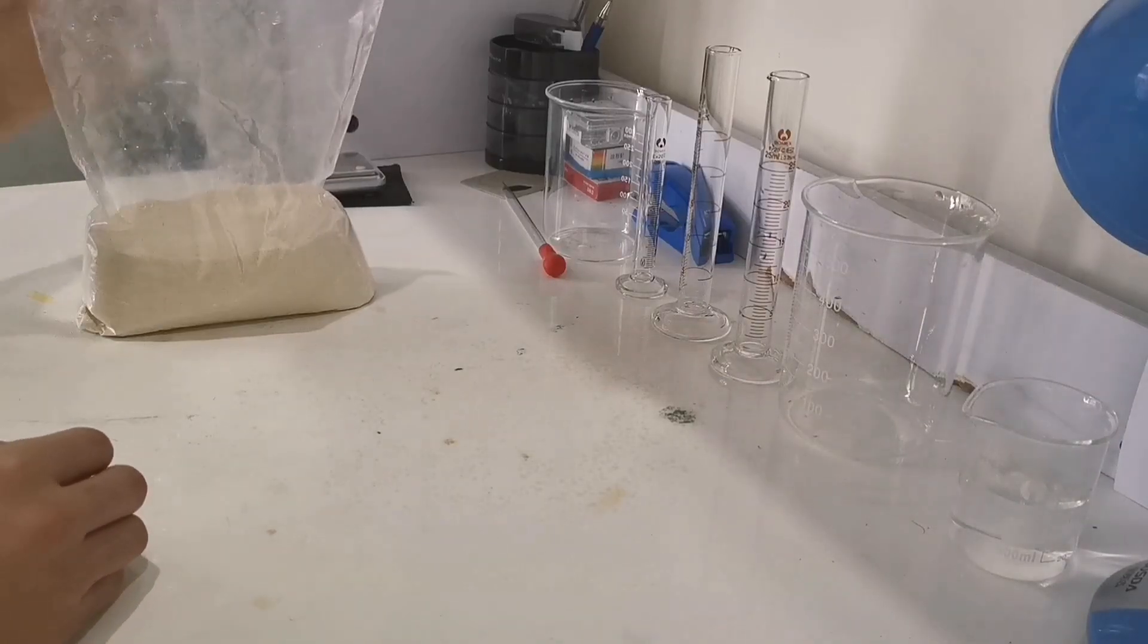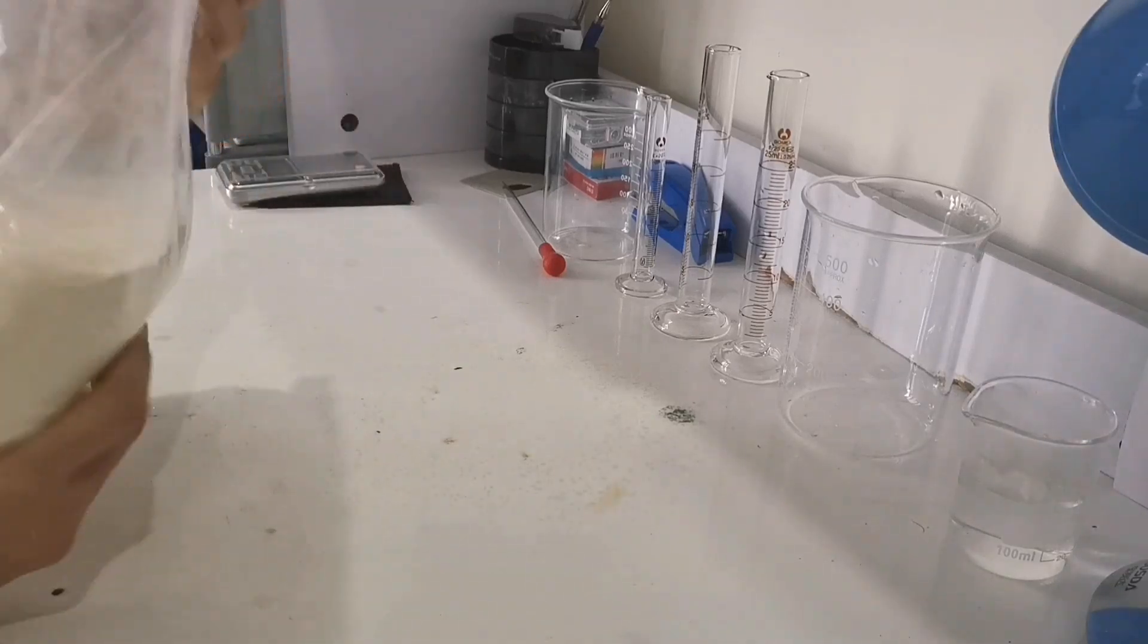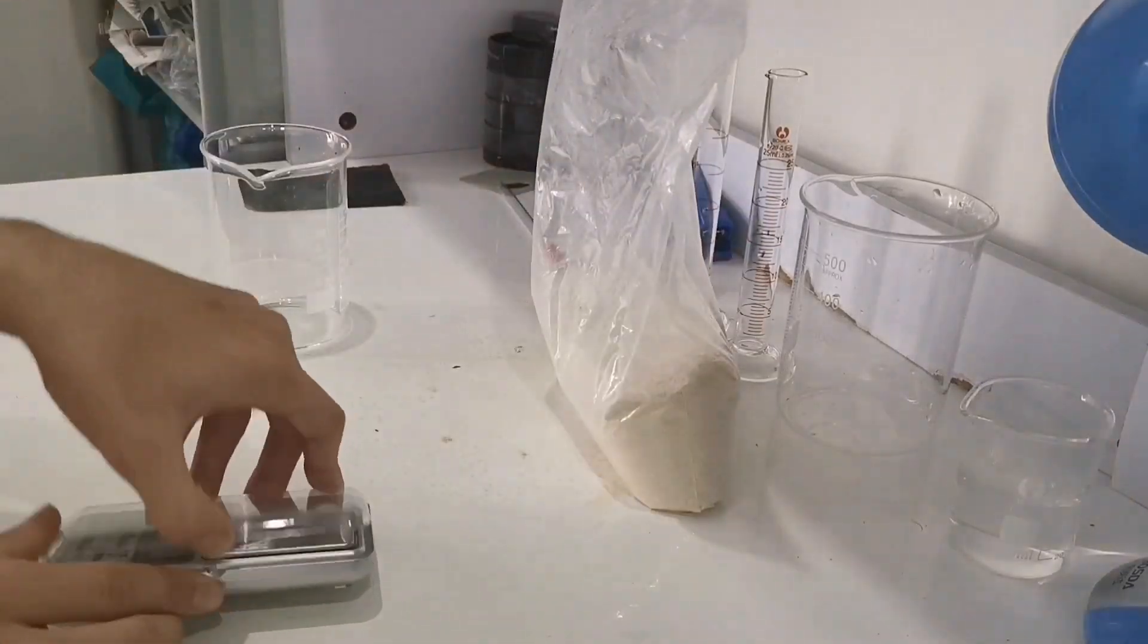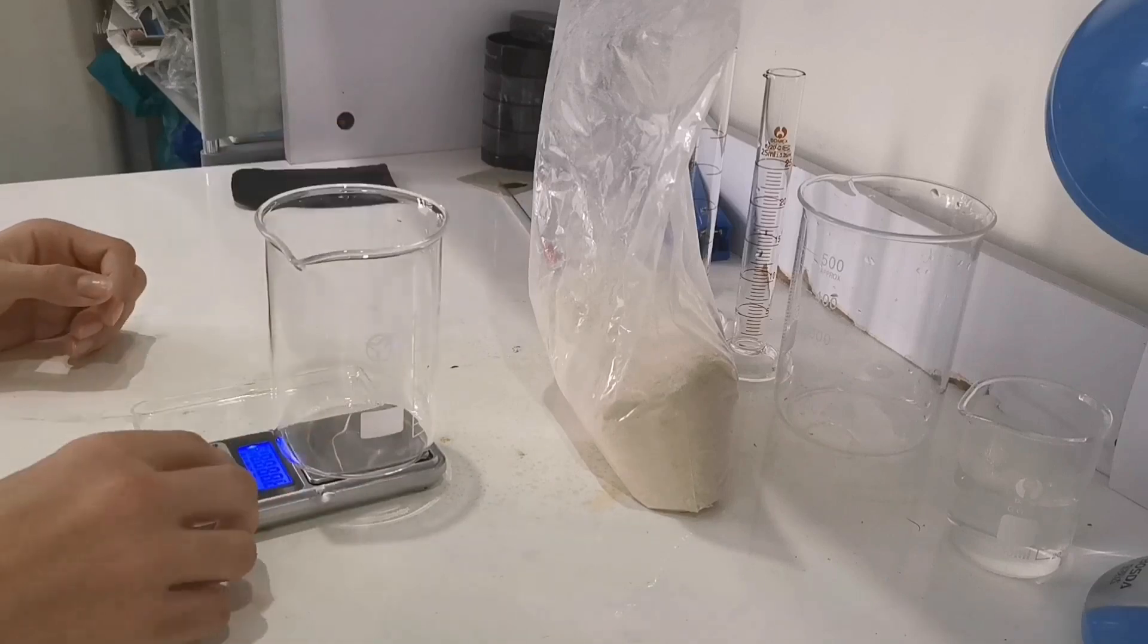So let's get started with casein. Casein has a whitish yellow color and it usually has a sheep wool flavor. Now we measure out 25 grams of casein into a beaker.